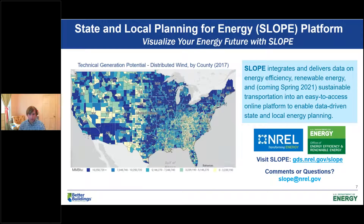The focus of today's presentation is SLOPE. For those of you that are not familiar with SLOPE, SLOPE integrates and delivers data on energy efficiency, renewable energy, and coming very soon, sustainable transportation into an easy-to-access online platform to enable data-driven state and local energy planning. SLOPE is a collaboration between nine U.S. Department of Energy offices and the National Renewable Energy Laboratory, or NREL, and is designed to support state and local governments and other key energy planning stakeholders in building a 100% clean energy economy. SLOPE can assist decision makers in understanding the various cost-effective options to meet their clean energy and climate goals. It captures the value of numerous but dispersed energy data and tools available by increasing awareness of and access to these resources, and provides an integrated and easy-to-use platform with compelling data visualizations for users to explore and better understand the impacts of energy actions.